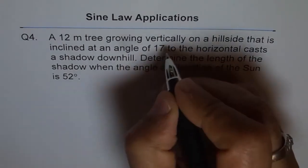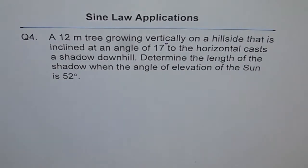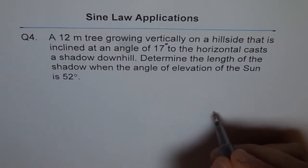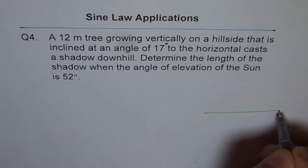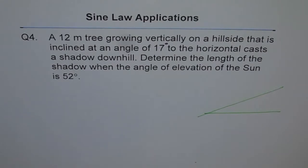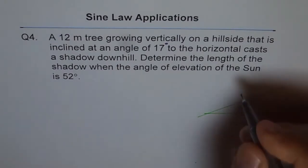This is related to the previous example. The only thing is the sun's position changed — actually it is our position which changes and not the sun's, but it is always convenient to make other people change rather than change yourself. So we have the same kind of inclined plane, but this time the position of the sun is different. Instead of coming from the left side it is coming from the right side, and the shadow of the tree is now down the hill.